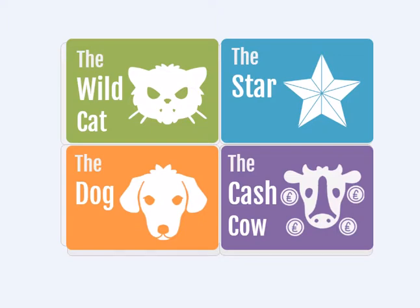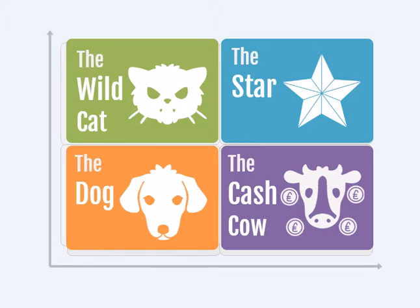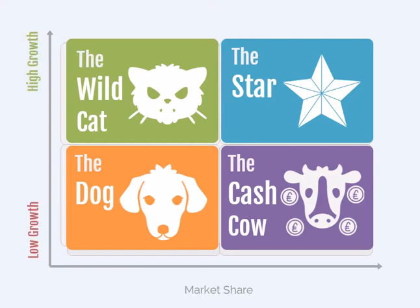As you can see, there are two axes in the Boston Box. The vertical axis represents market growth and ranges from low to high. The horizontal axis represents market share, which again ranges from low to high.